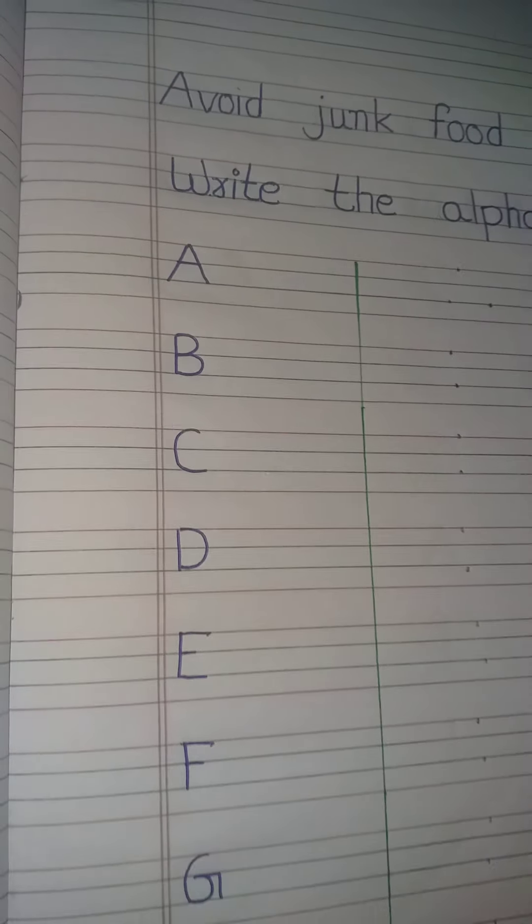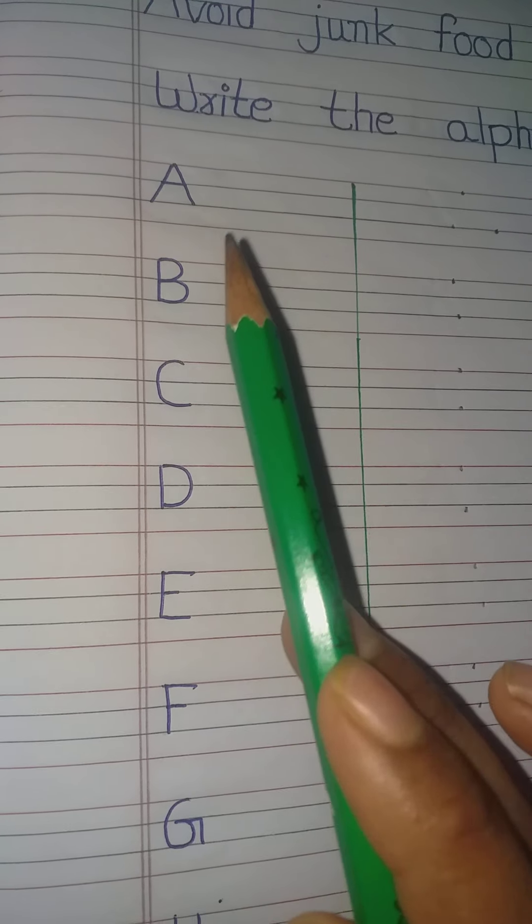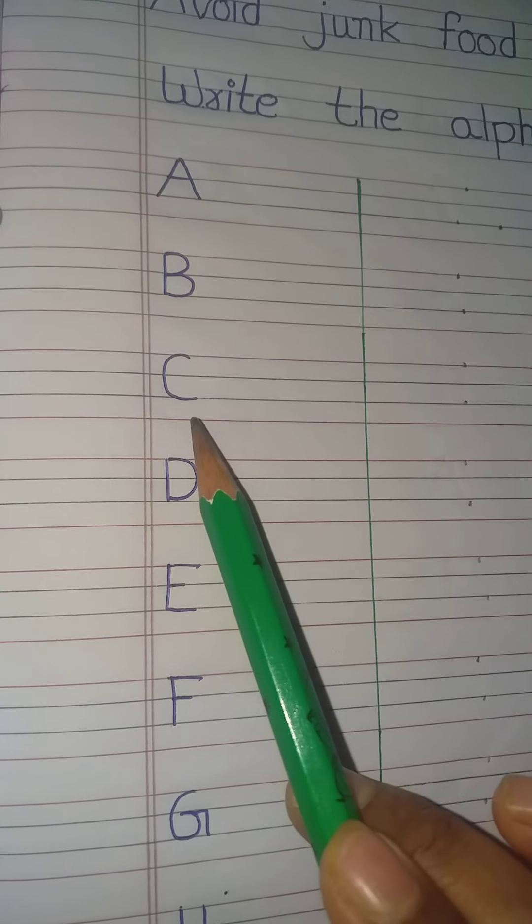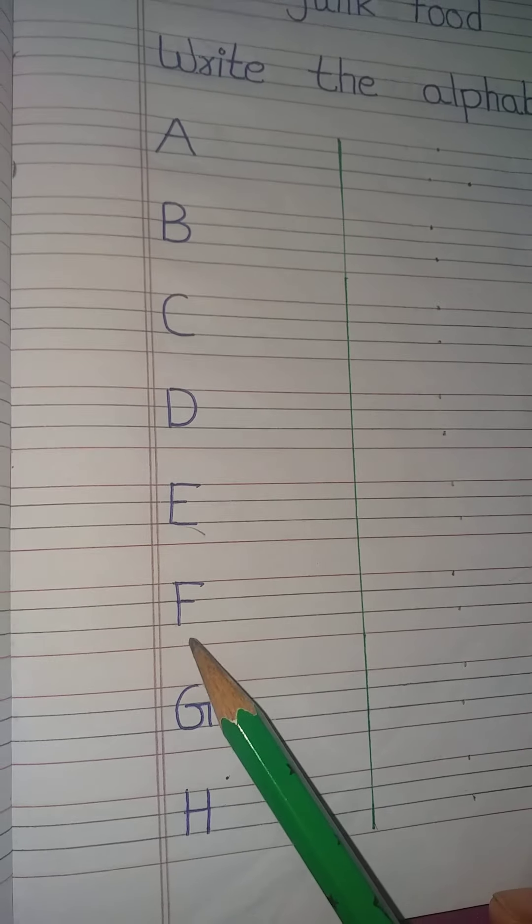You have to write A, B, C, D, E, F, G, H. This is a A, this is a B, this is a C, D, this is E, this is F, this is G, this is H.